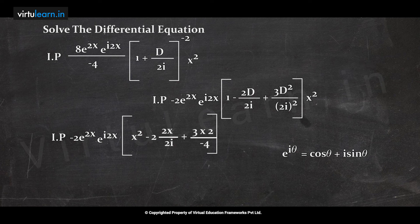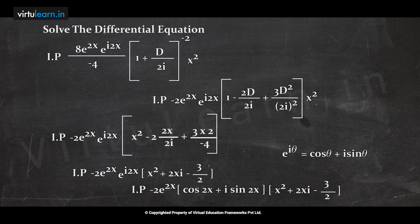On simplification: Im[-2e^(2x)·e^(i2x) · (x² + 2x/i - 3/2)]. Using 1/i = -i, this becomes Im[-2e^(2x)·e^(i2x) · (x² + 2xi - 3/2)].